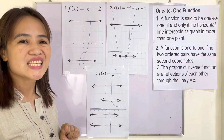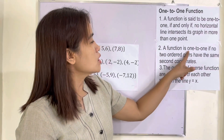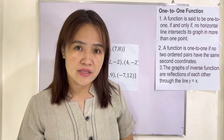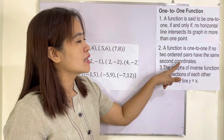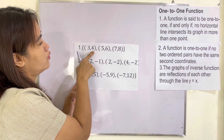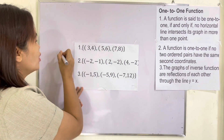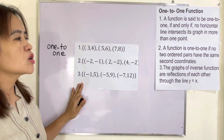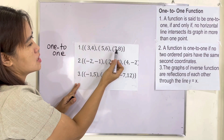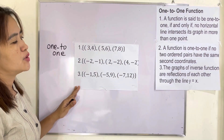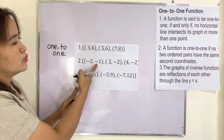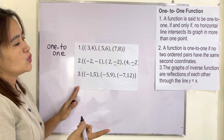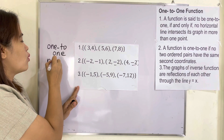Number two is not a one-to-one function. Feature number two: a function is one-to-one if no two ordered pairs have the same second coordinates. We have the set {(3,4), (5,6), (7,8)} — number one is one-to-one because no second coordinates are repeated: four, six, and eight are all unique. Number two has {(-2,-1), (2,-2), (4,-2)}, where negative two is repeated as a second coordinate, so this is not a one-to-one function.